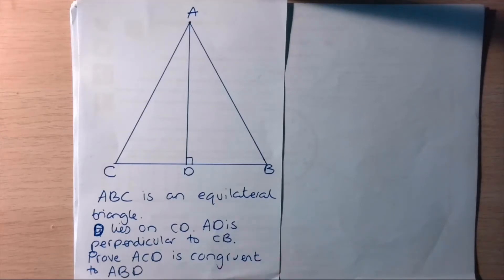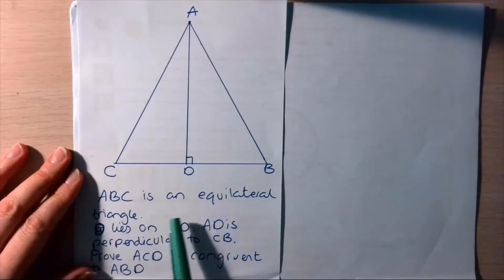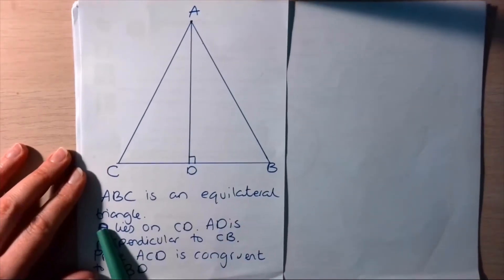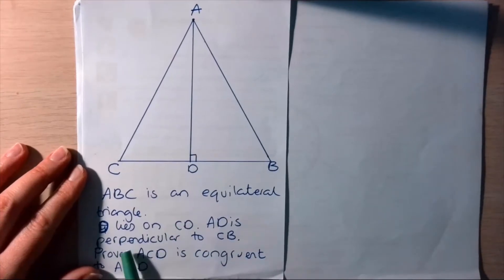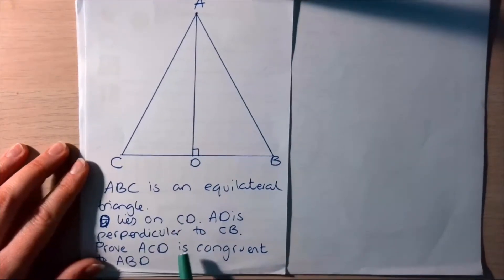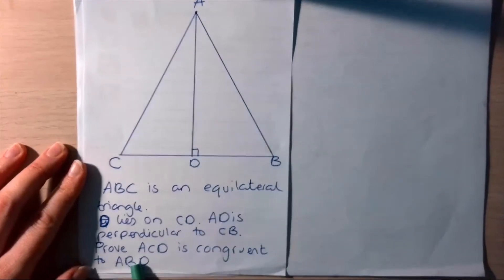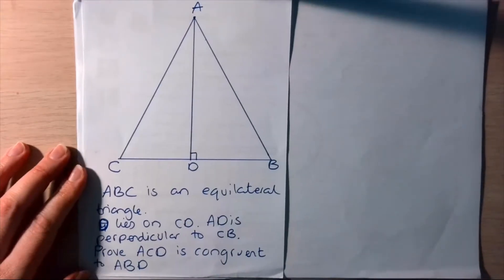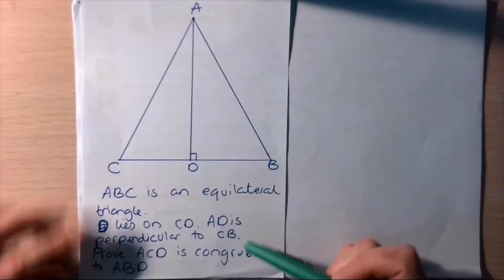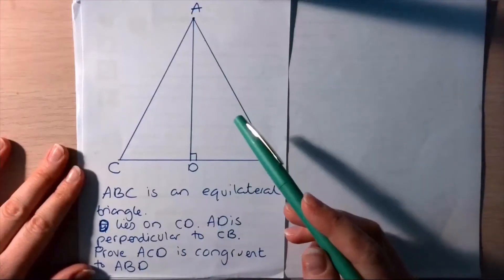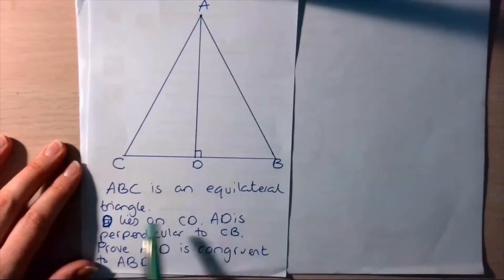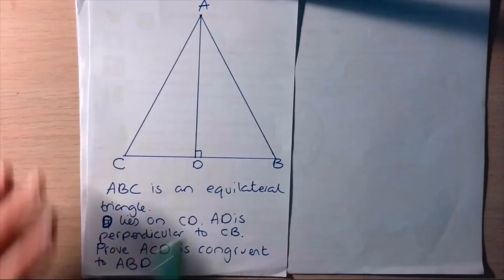I've got three examples here. The first one: ABC is an equilateral triangle, D lies on CB, AD is perpendicular to CB, and we're to prove that ACD is congruent to ABD. A lot of this is actually given in the diagram already — these are written on exam papers just to make sure that there's nothing ambiguous about it.